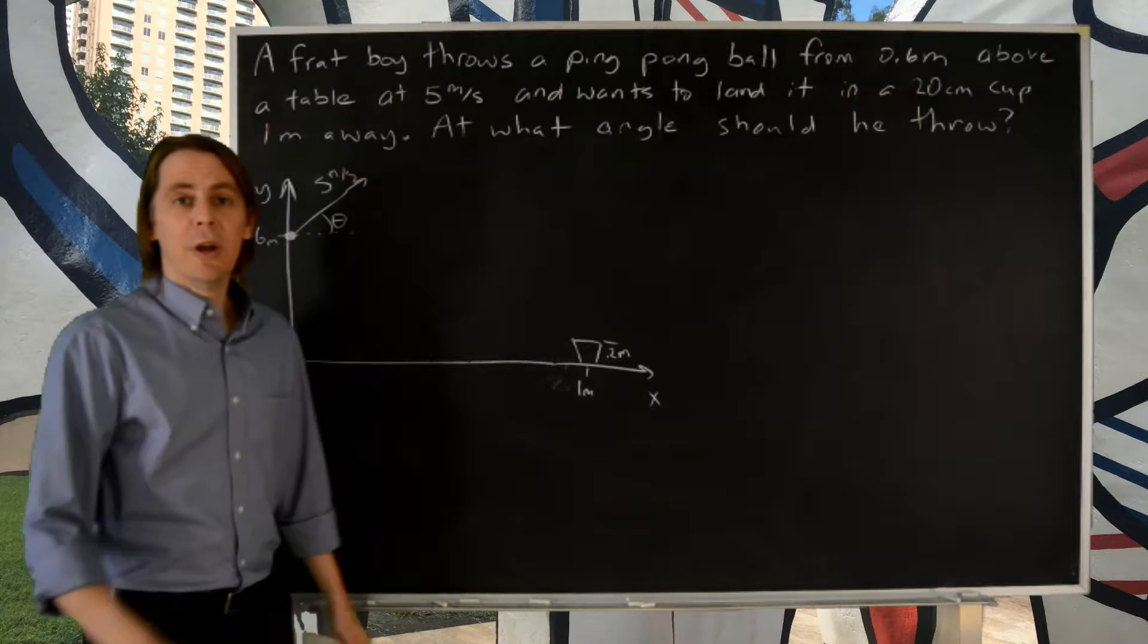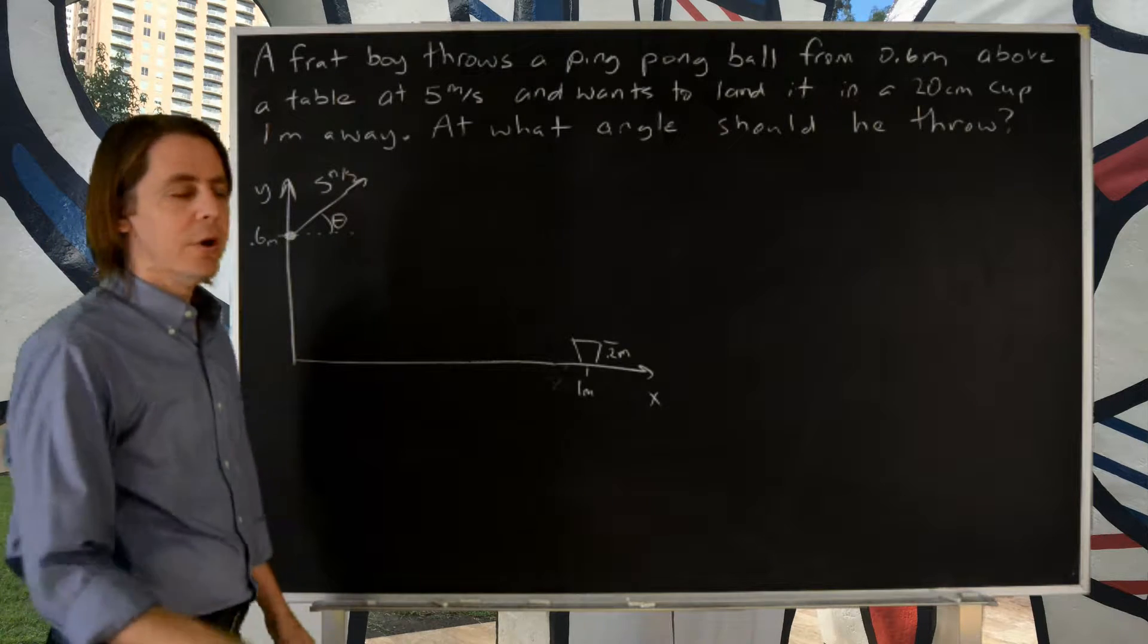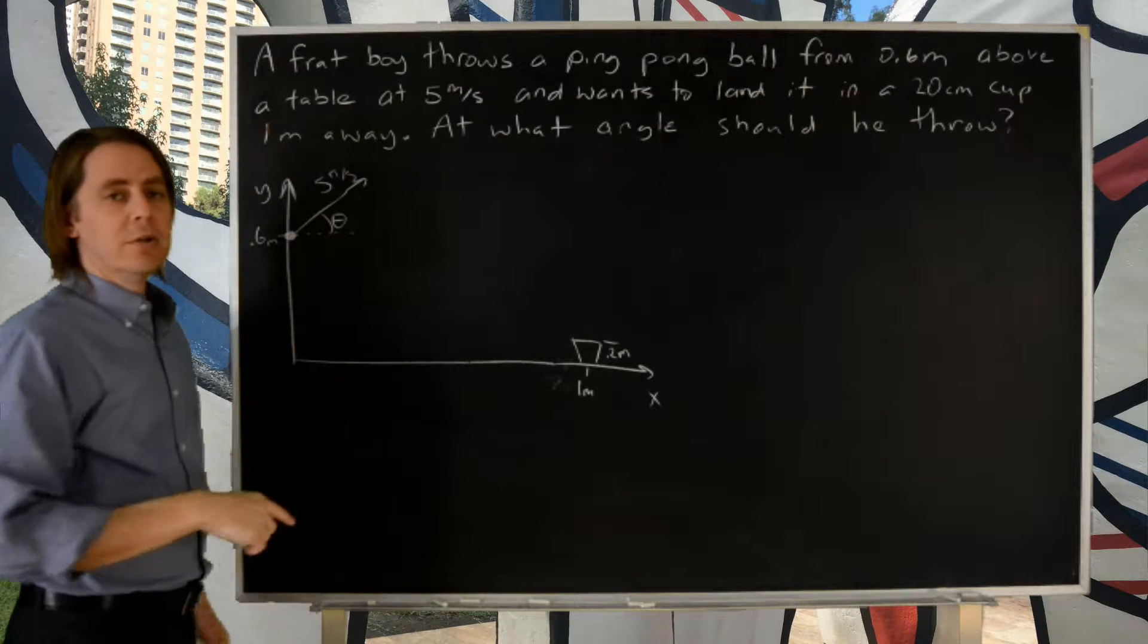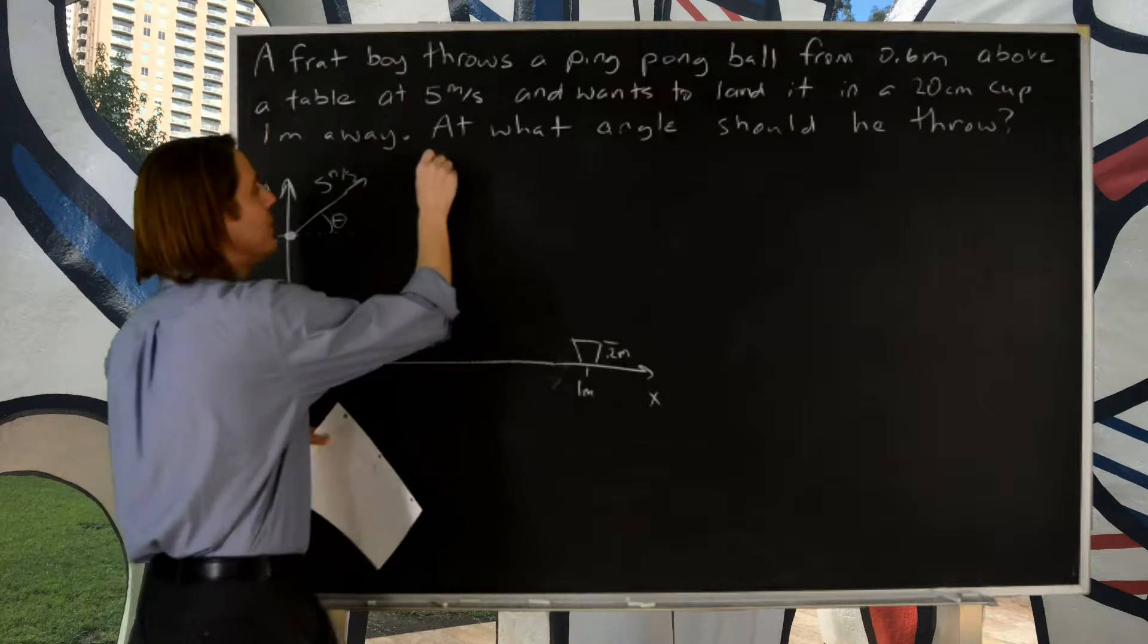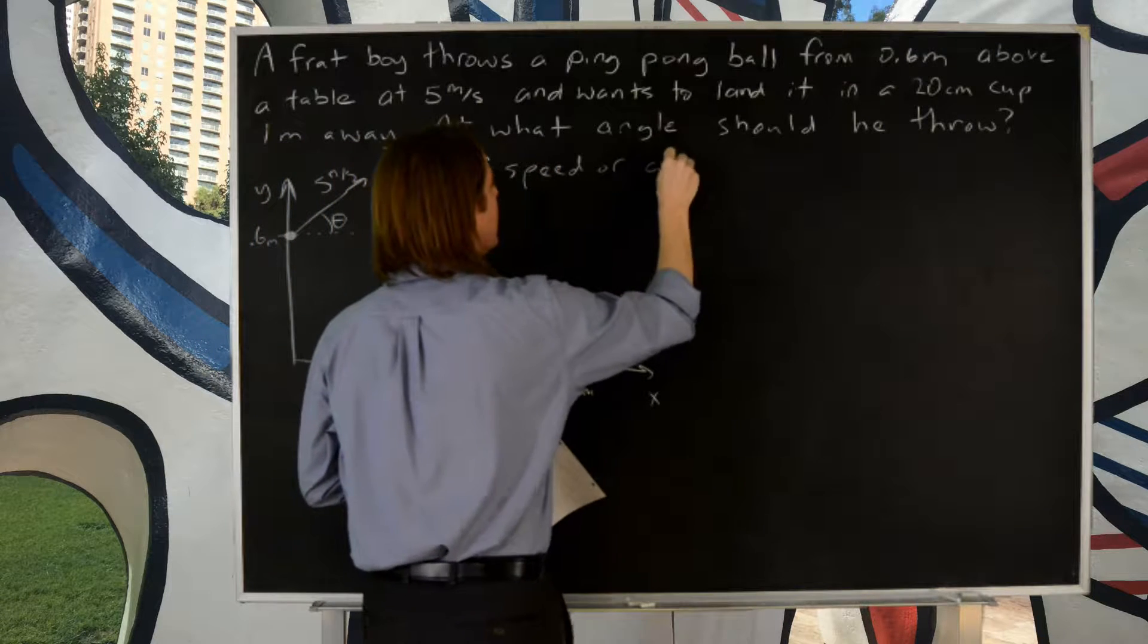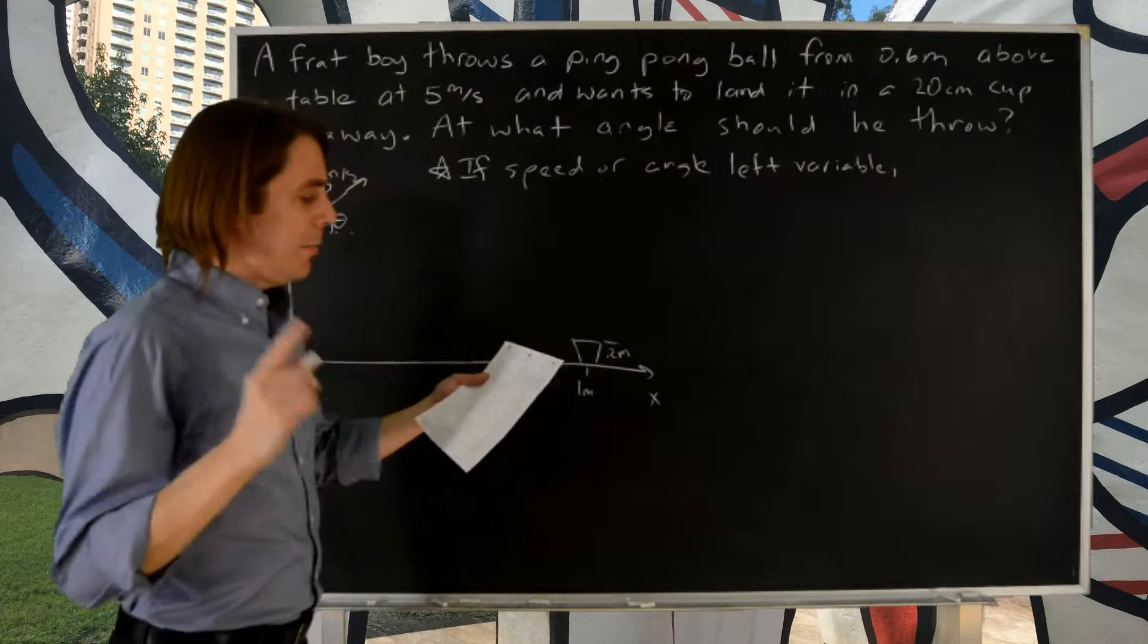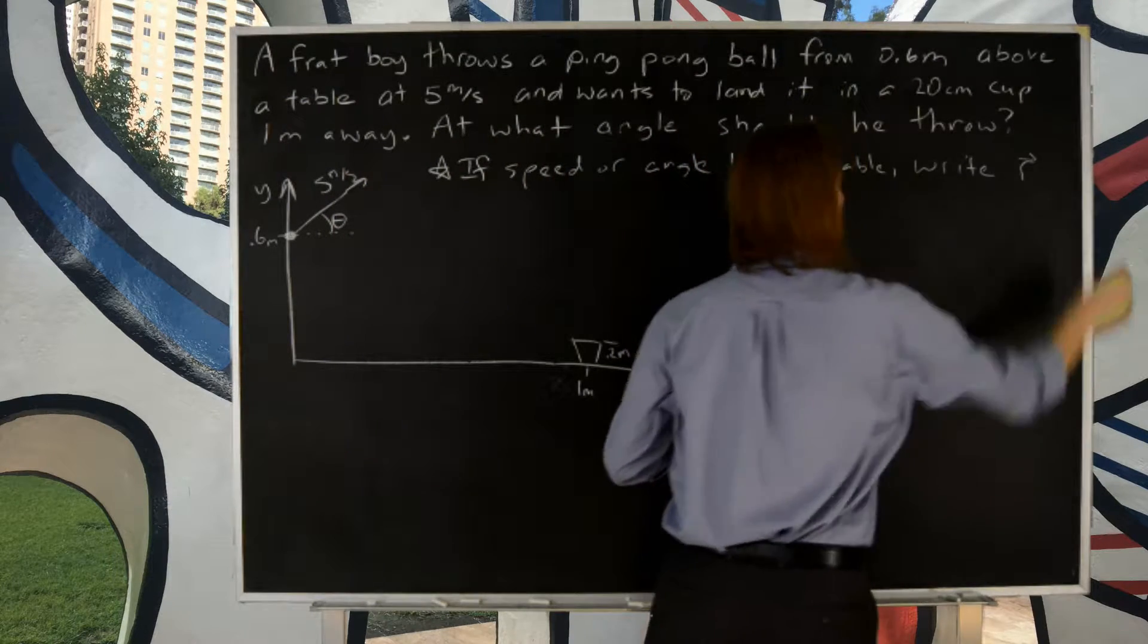And the question is simply, what angle should the frat boy throw at? If he insists on throwing 5 meters per second, what angle would be best? This problem is a little bit more difficult than the previous one because we don't know the angle, so this one is definitely going to lead to sort of an algebraic mess. So let's say, let's even make that a little rule, in these problems if speed or angle is left variable, then my advice is to write r, the position vector r.